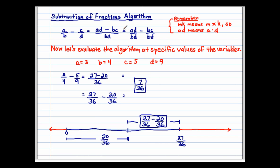We also know that AD minus BC over BD is equal to AD over BD minus BC over BD. I've written that for you right here, so you can see there are two ways of representing this. The only reason we put it over BD here is because we know we're talking about the same unit. Remember that MK means M times K, so AD means A times D.